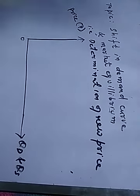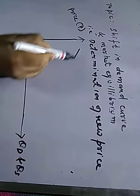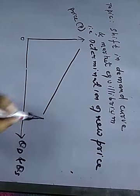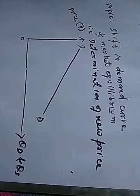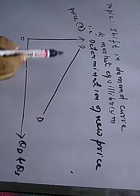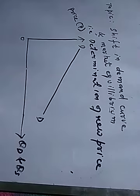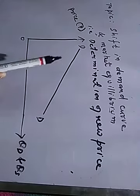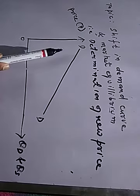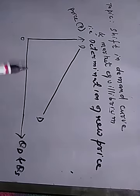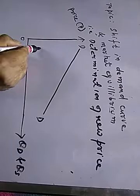This is the downward sloping demand curve, denoted by D, based on the law of demand, which shows an inverse relationship between the price of a good and quantity demanded. When price increases, quantity demanded of a good will decrease, and when price decreases, quantity demanded of a good will increase.